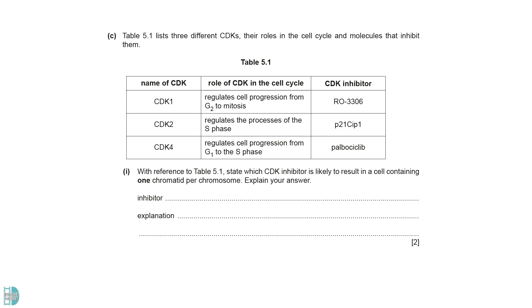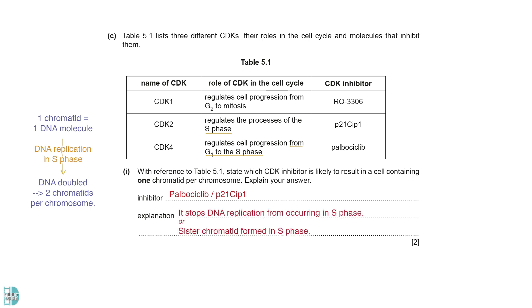C1 wants you to choose which CDK inhibitor is likely to result in a cell containing one chromatid per chromosome. Each chromatid is one DNA molecule. After DNA replication during the S phase, the chromosome consists of two sister chromatids joined at a centromere. So, the inhibitor that affects the S phase would show the effect. It prevents DNA replication from occurring. So, the sister chromatid is not formed, resulting in a chromosome with only one chromatid.